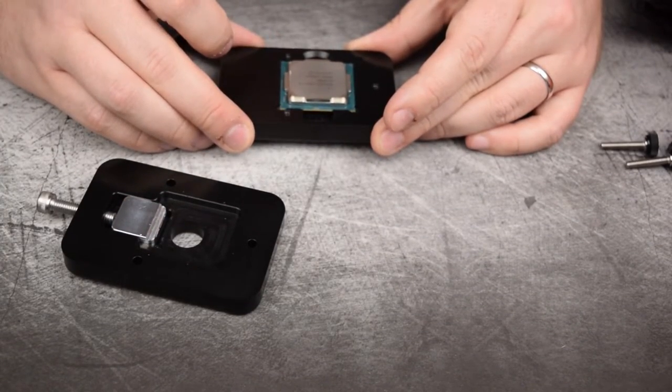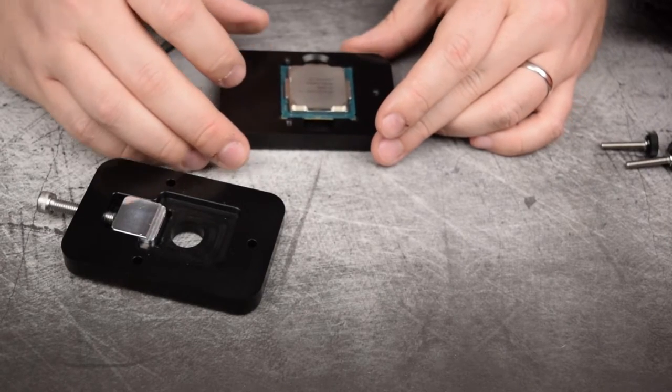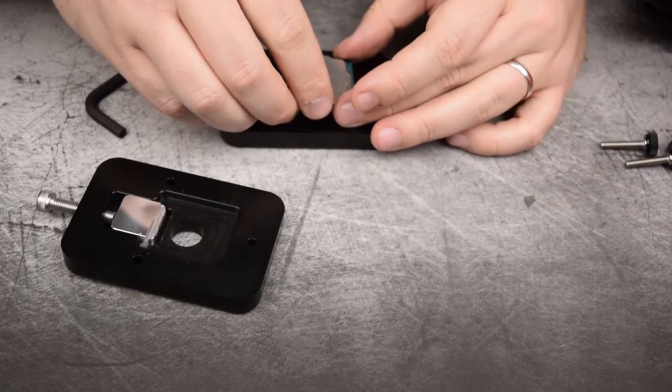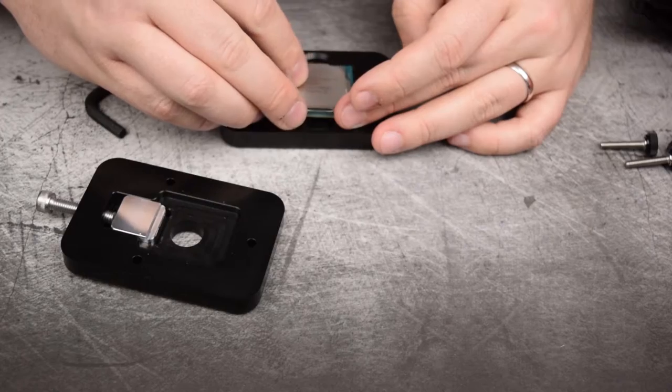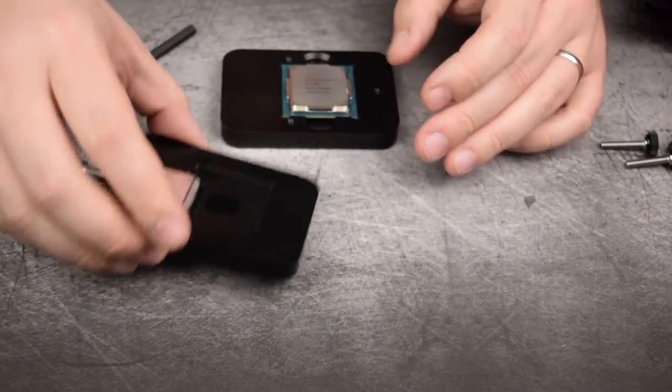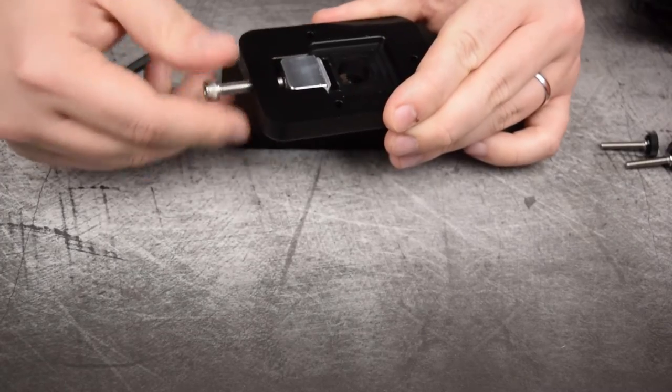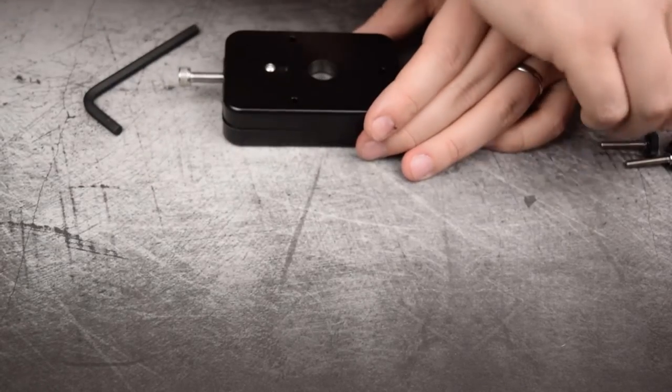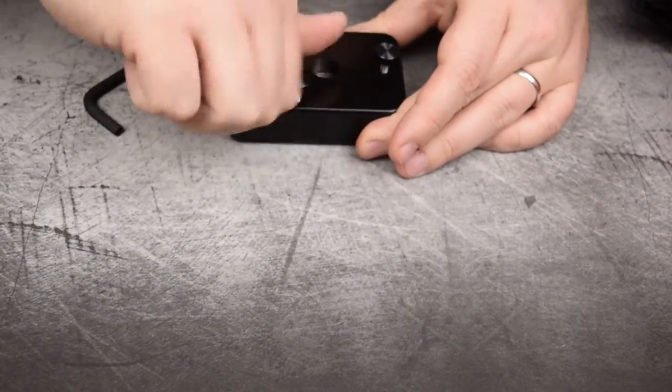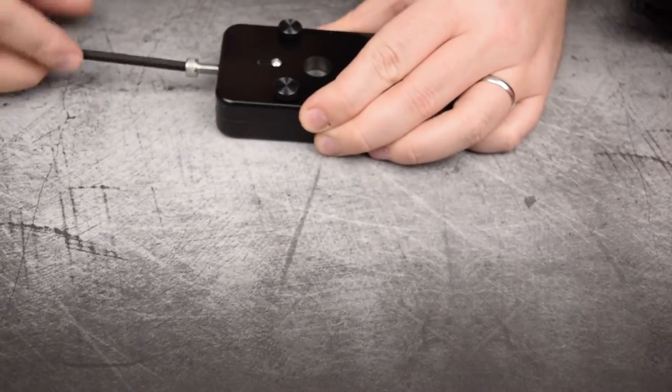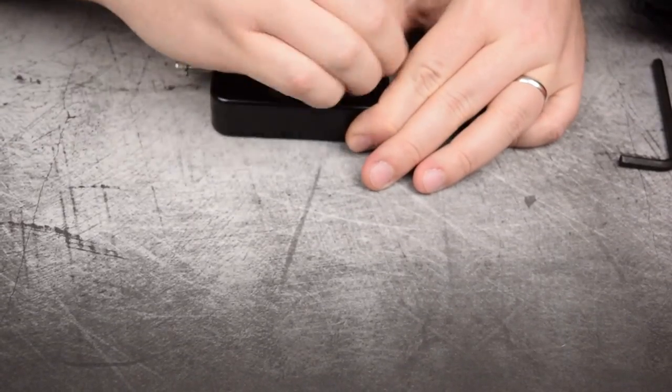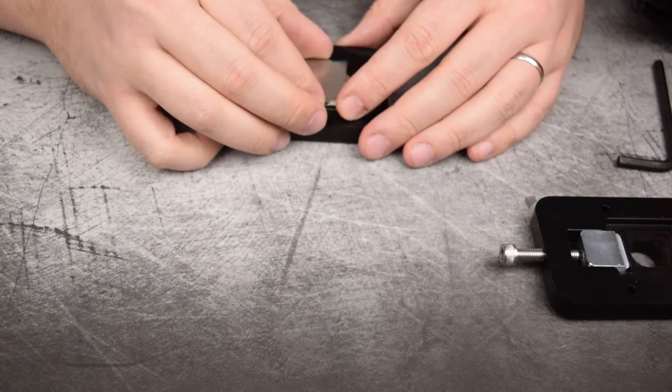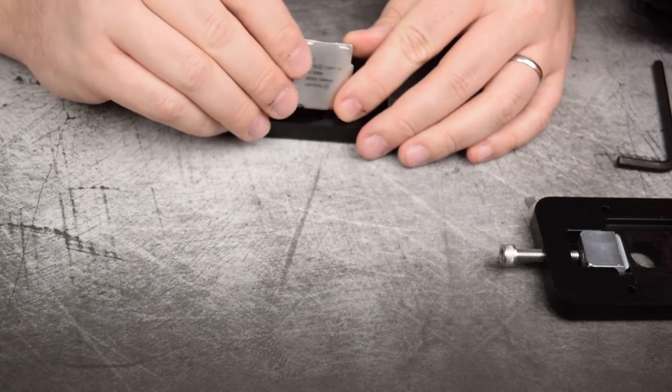But it has moved this IHS ever so slightly. So what we're going to do now is go ahead and take the chip out and we're going to flip it around so that it's facing the opposite direction. Then we're going to go ahead and put the top back on it and give it a nice push in the opposite direction. So we'll pull this heat spreader off.